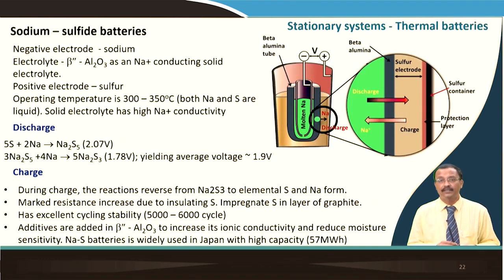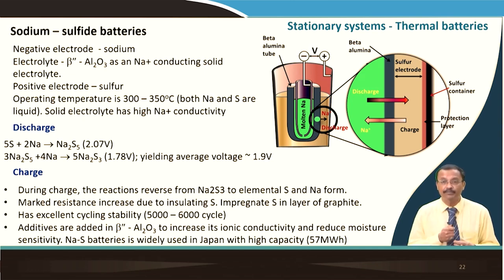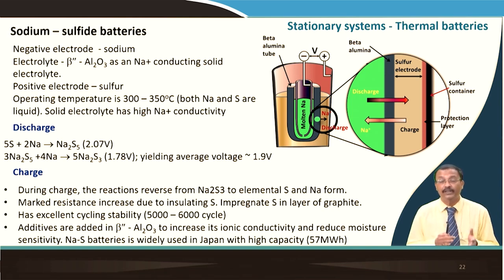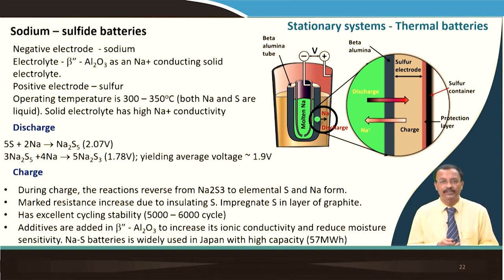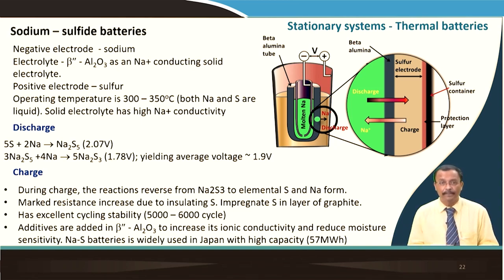Another stationary system is the sodium sulfur thermal battery. The negative electrode is sodium, the electrolyte is beta-alumina — a good sodium ion conducting material. The positive electrode is sulfur. Operating temperature is around 300 to 350°C, and both sodium and sulfur are in liquid form. During discharge, sodium reacts with sulfur to give a voltage of about 2.7 V, followed by a further reaction.